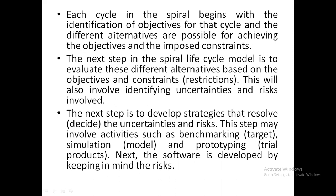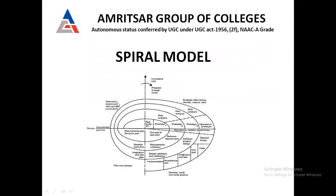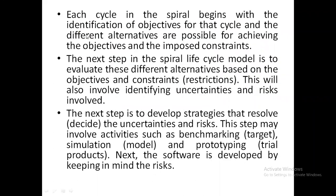Each cycle in the spiral begins with identification of objectives for that cycle, along with different alternatives possible for achieving those objectives and the imposed constraints. In the first phase, we determine the objectives of the software, identify different ways to develop it — since there may be more than one approach — and specify the major constraints. Then we evaluate these alternatives based on objectives and constraints.